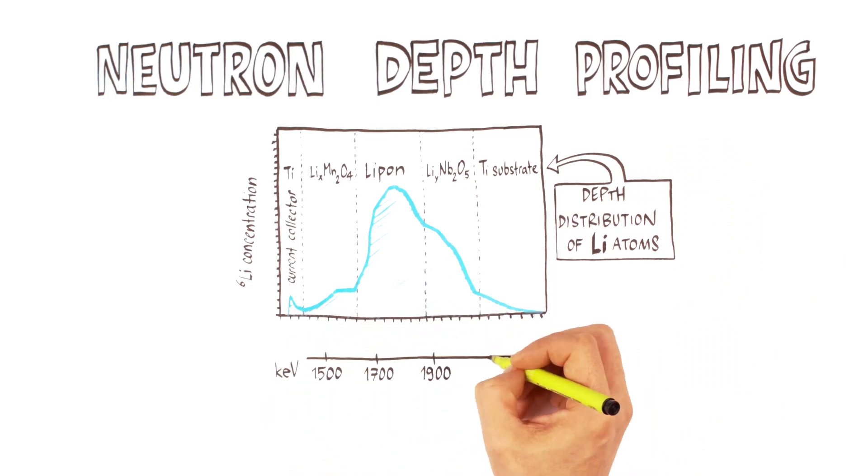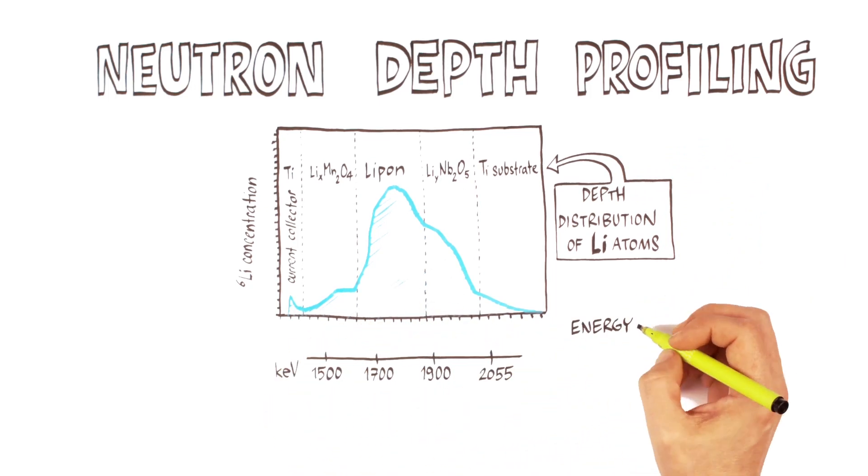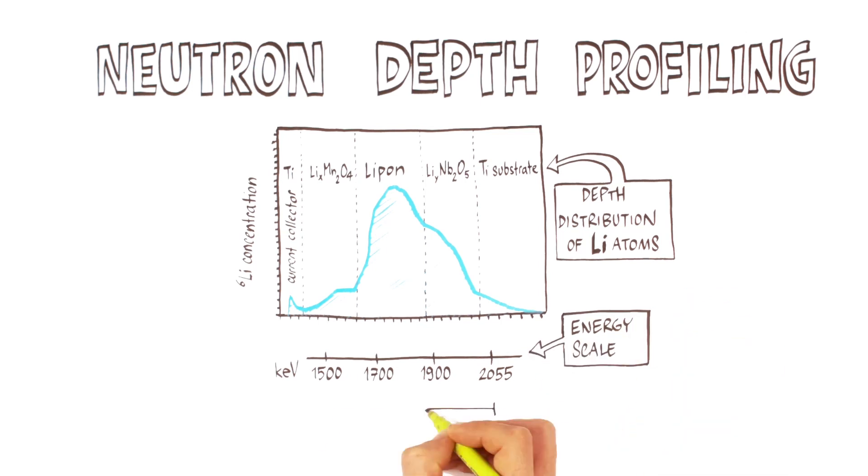Therefore, the dependence of concentration of lithium ions on depth can be obtained by accumulating a sufficient number of such events.